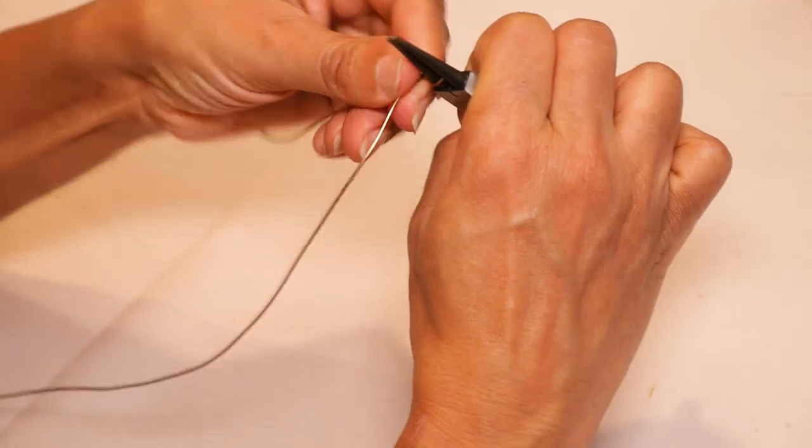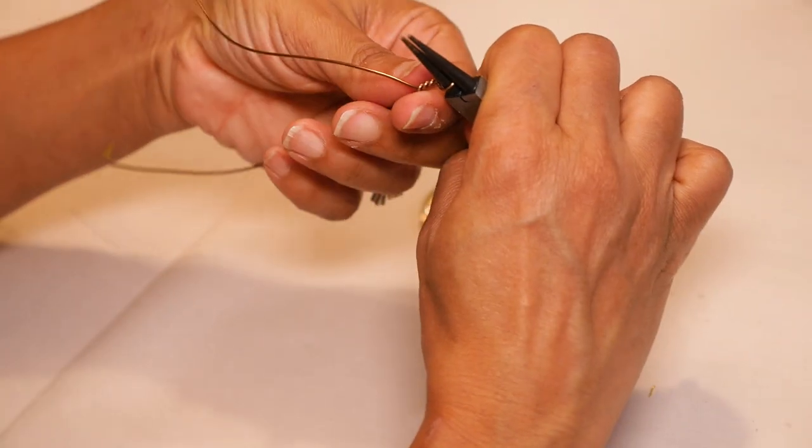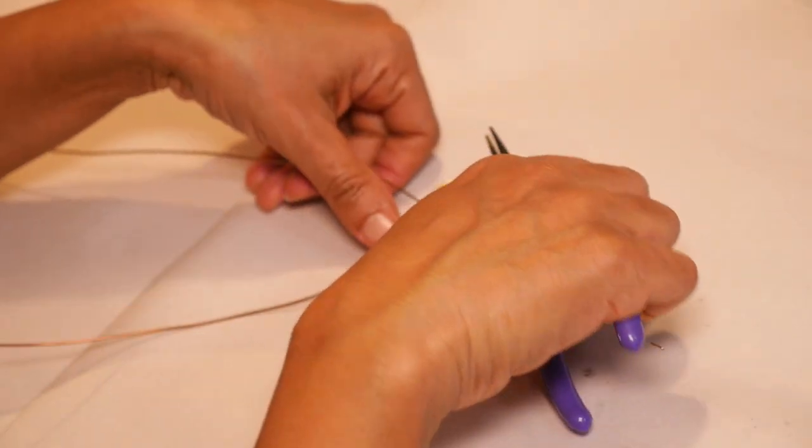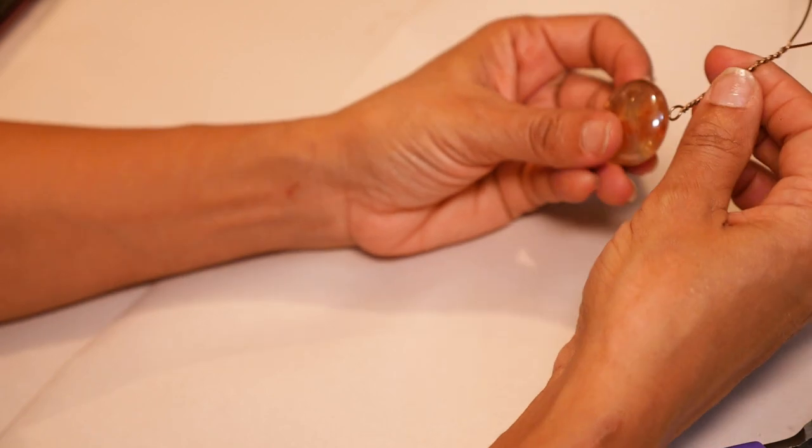And then underneath that I'm going to twist the wires together. I'm doing a long twist that is about two, two and a half inches. So I'm going to have to measure it against the stone.